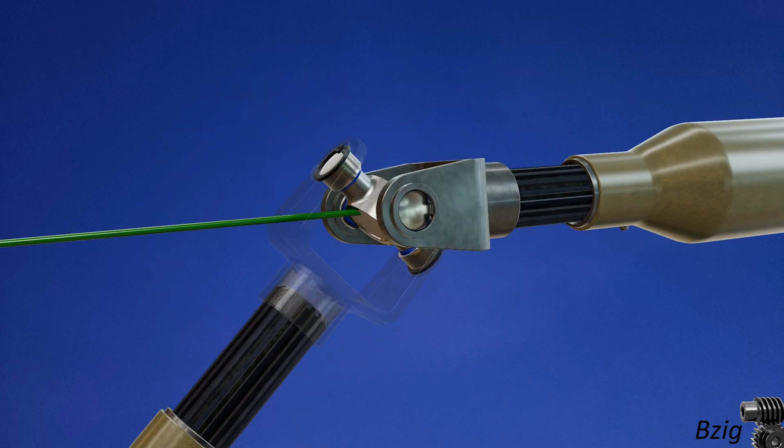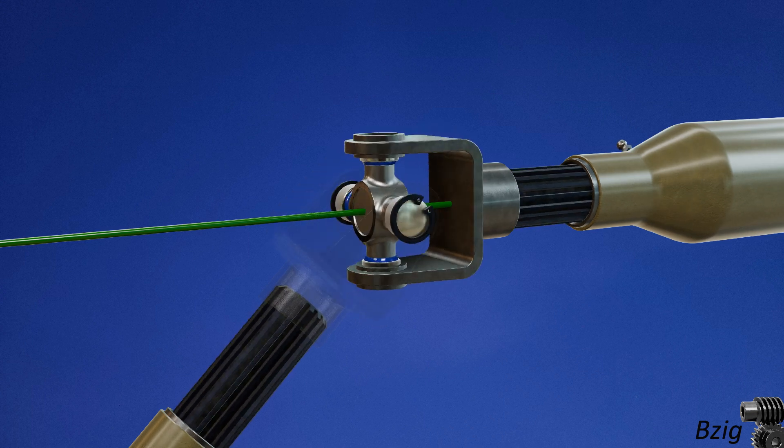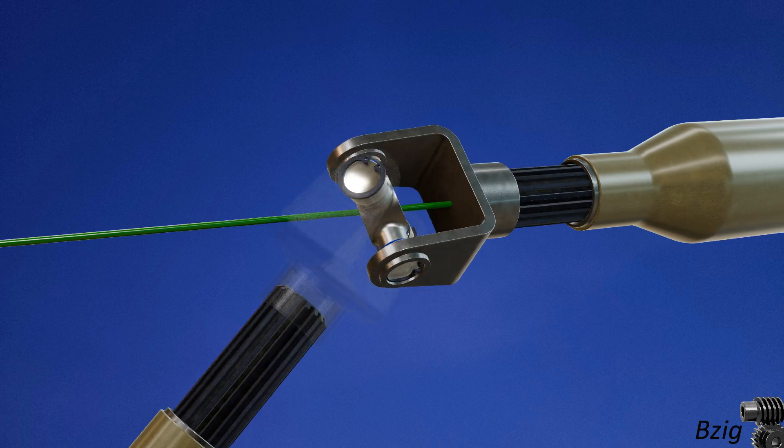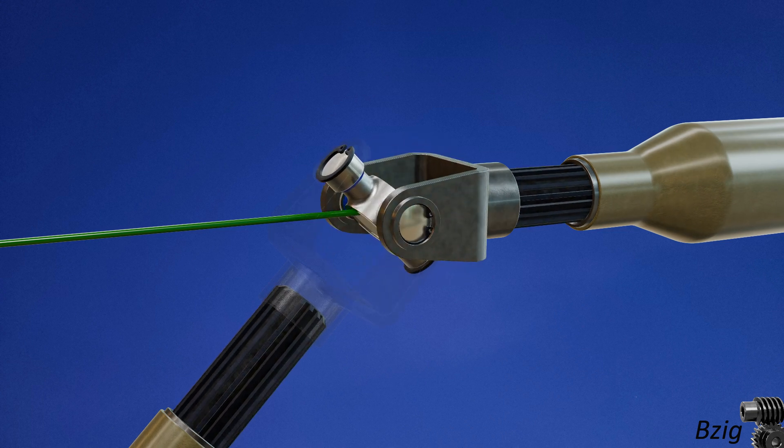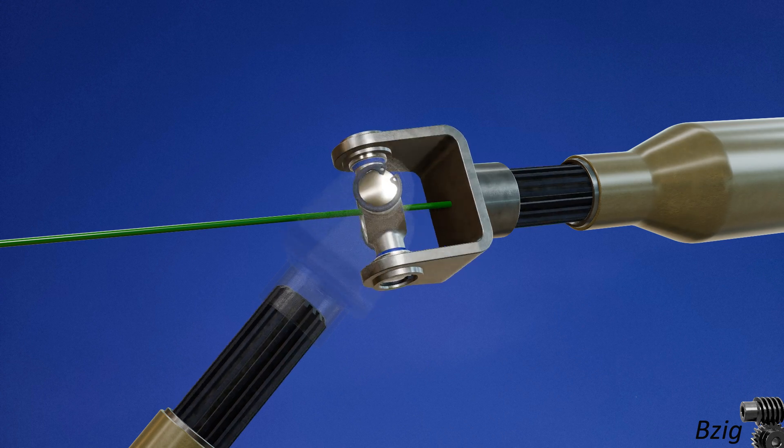To show why universal joints are not constant velocity joints, I'll hide the output shaft in order to show the device known as the cross. I'll also add this green axis line to show the extension of the input shaft axis.